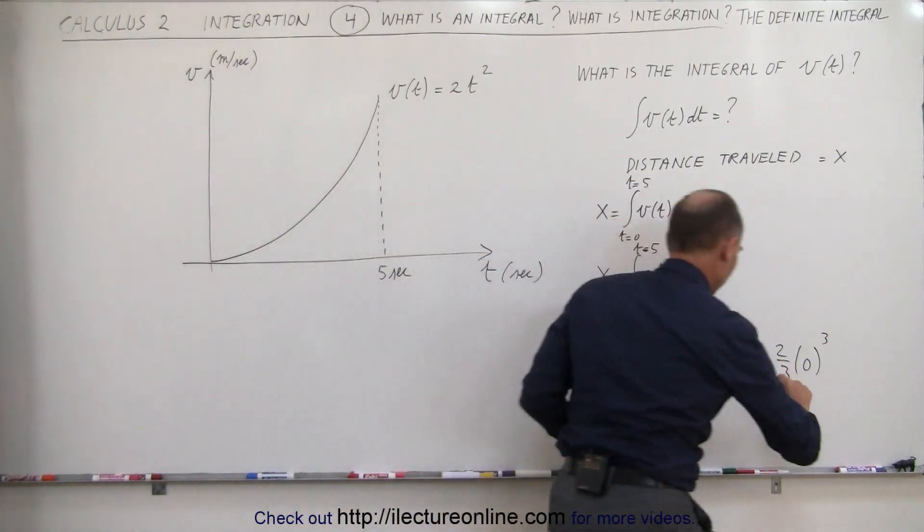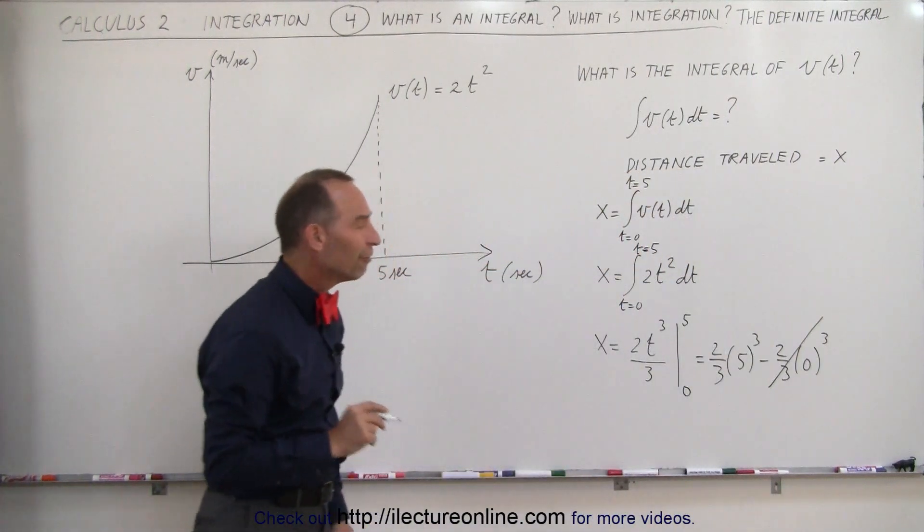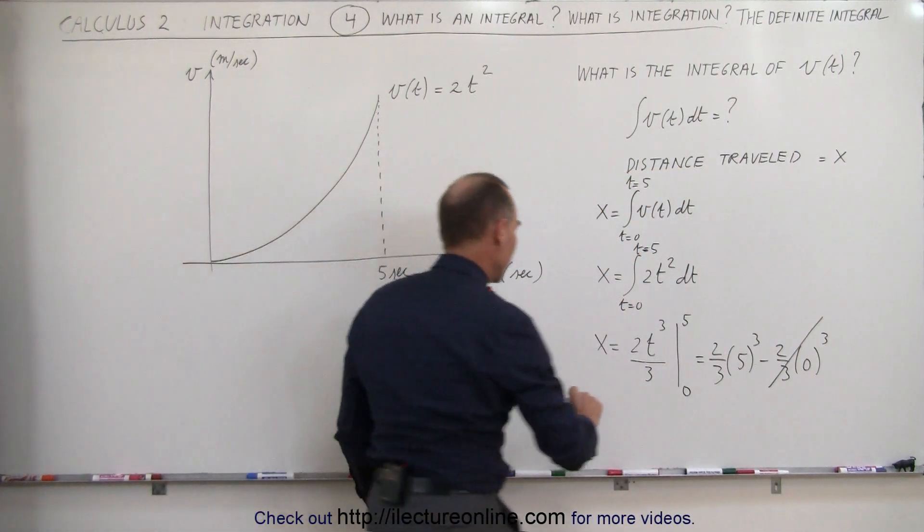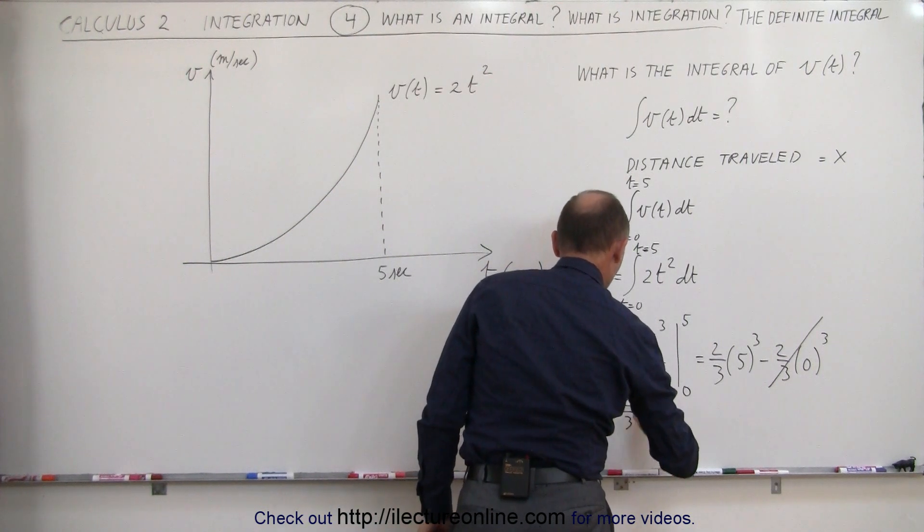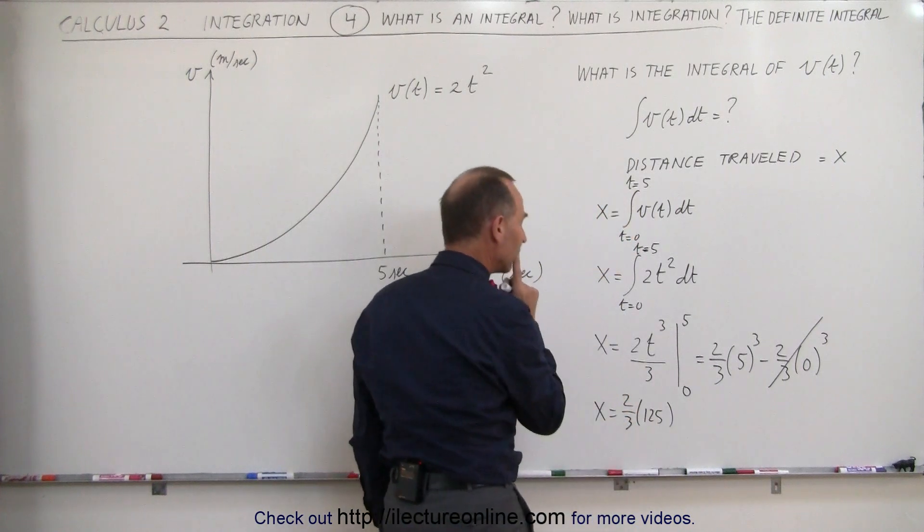And of course, 0 cubed is 0, so we don't need that portion that simply drops off. So it's 2 thirds of 5 cubed. That means that the distance traveled is equal to 2 thirds times 125, because that's what 5 cubed is equal to.